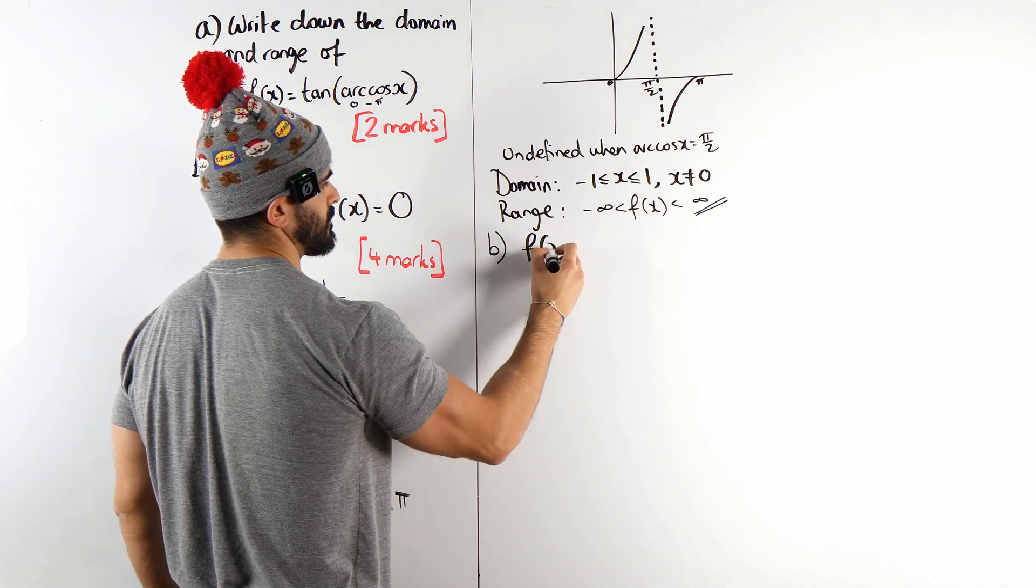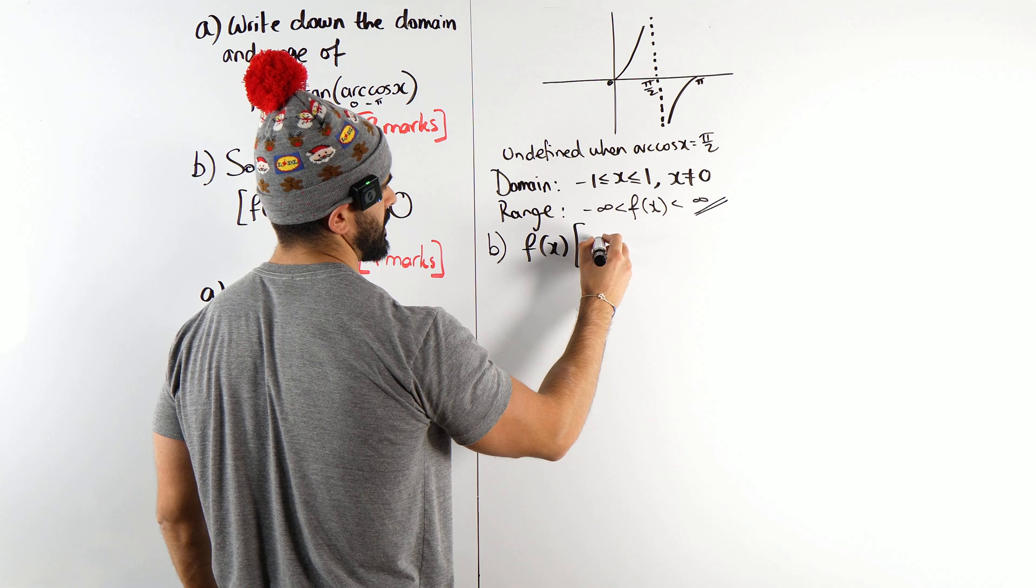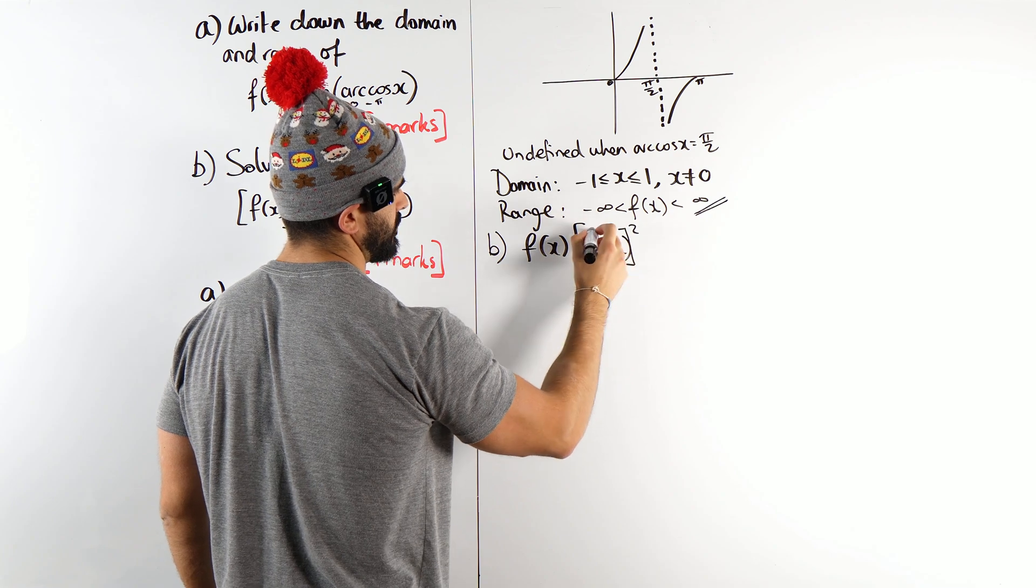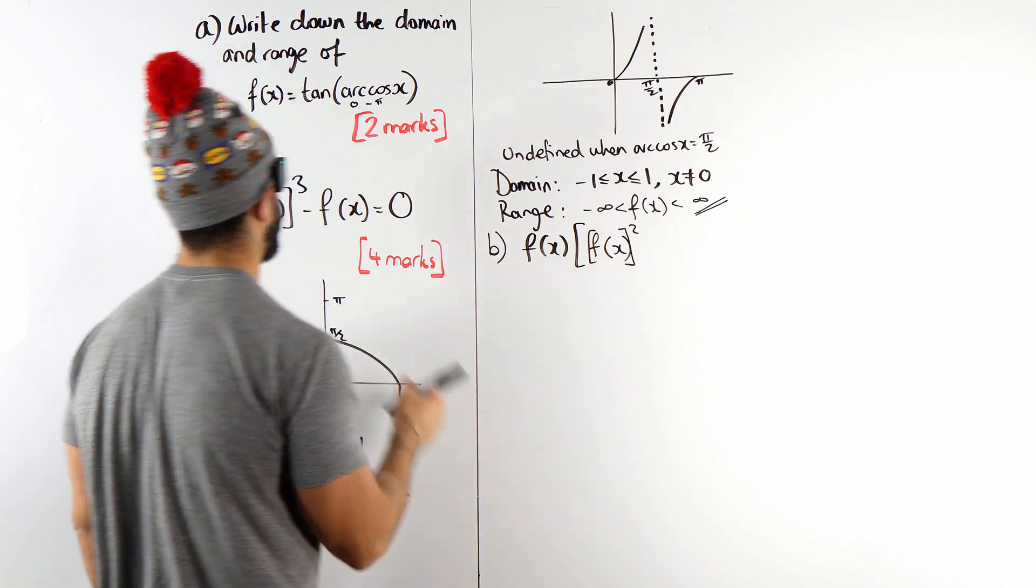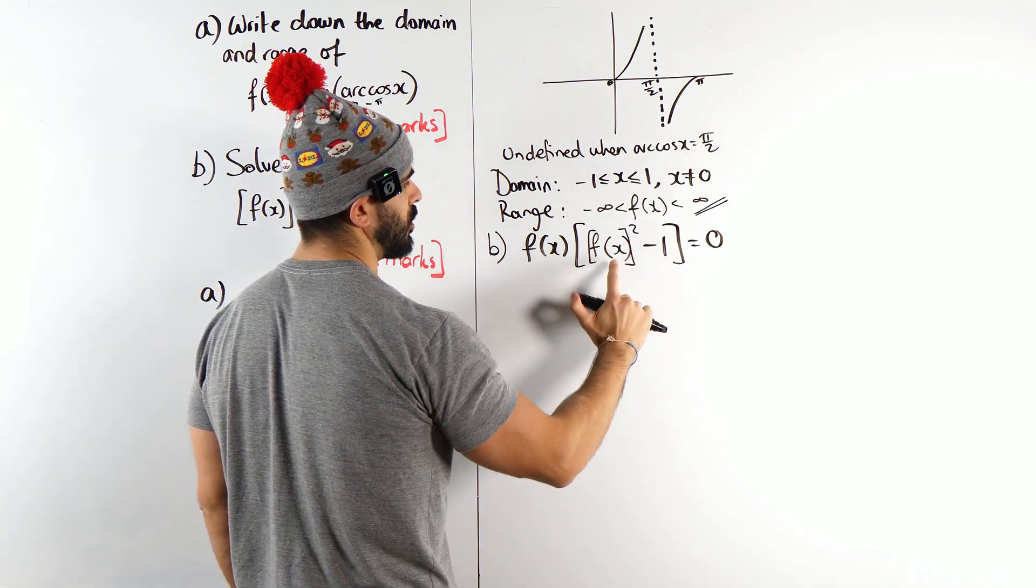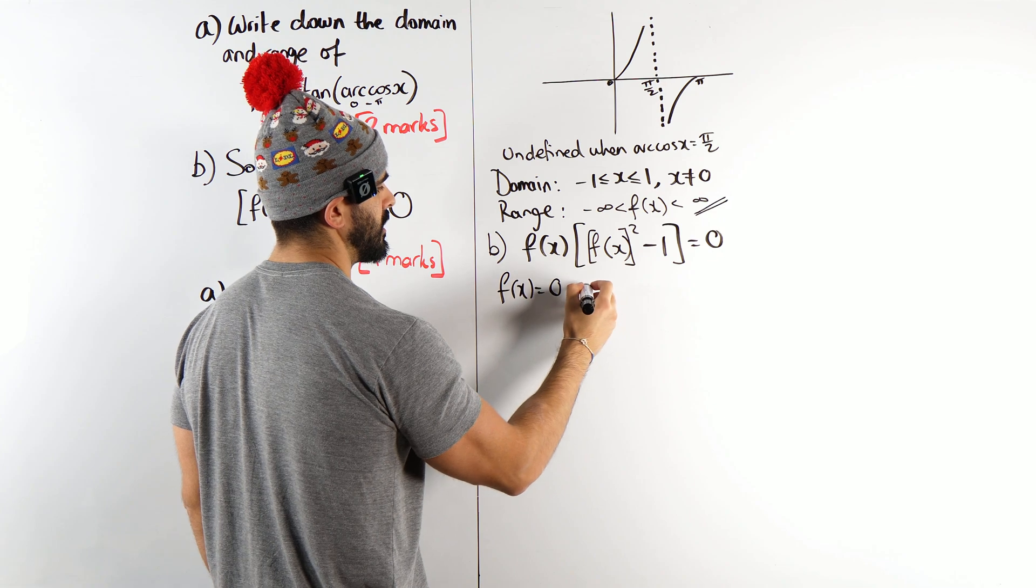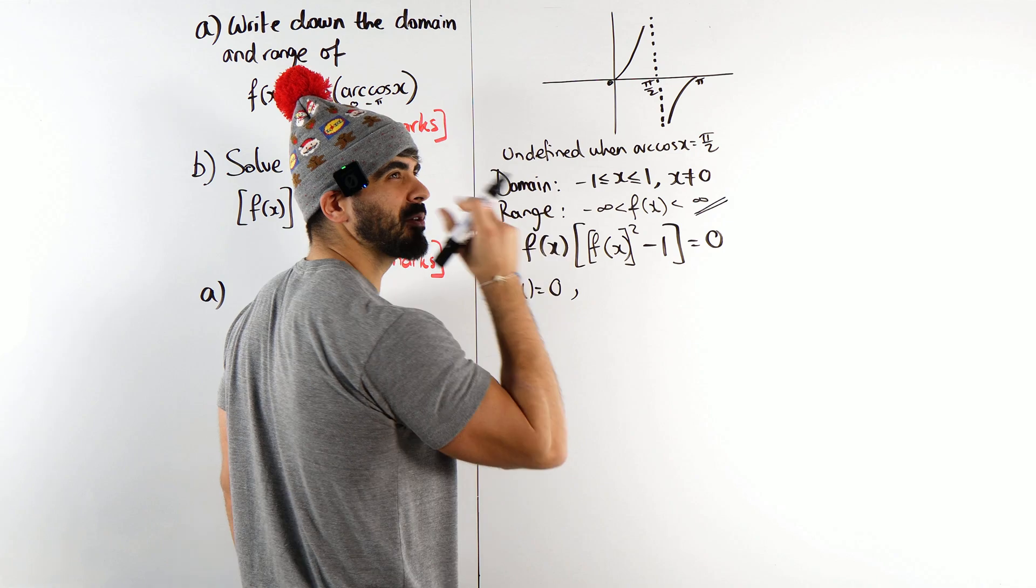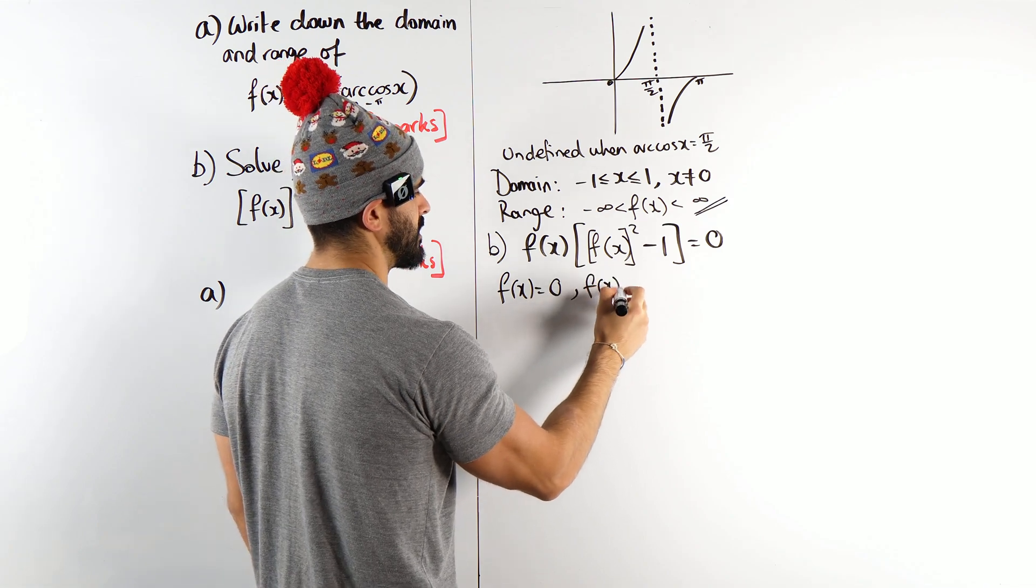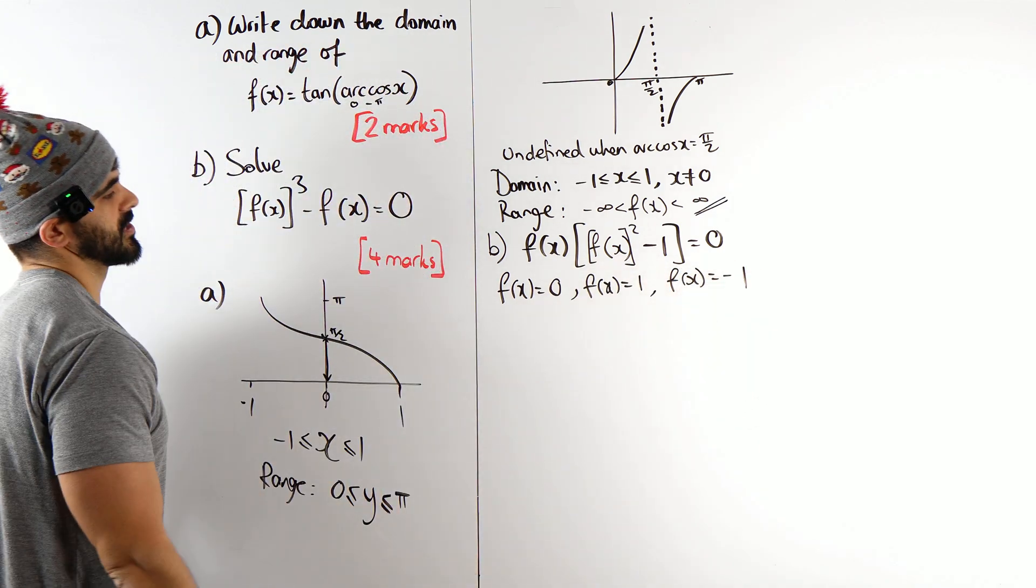So I get f(x) will be left. When I factorize out f(x), I'll get f(x) squared. I was thinking about how to write this. I don't really want a double square bracket. Anyway, minus 1 is zero. So either f(x) is zero or f(x) squared equals 1. So you're going to get f(x) is zero. I was going to square root it now. So you're going to get f(x) squared equals 1. Then you're going to square root it. So you're going to get f(x) is 1 and f(x) is minus 1.